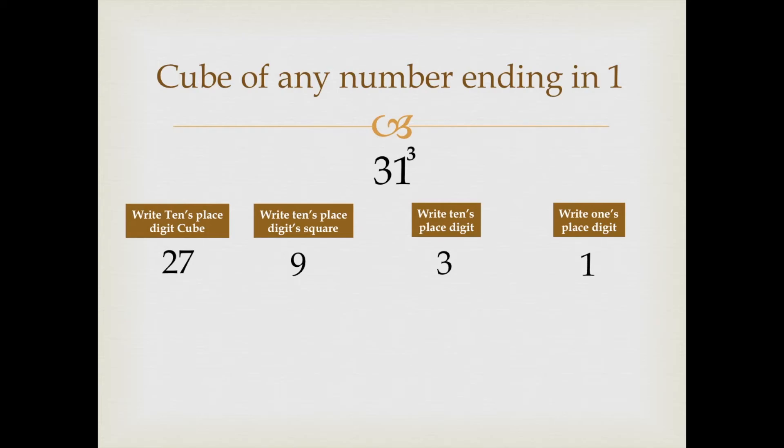Now, we will ignore the first and the last digit and we will multiply the middle two digits. 9 multiplied by 2 will become 18. Write 18 under 9. 3 multiplied by 2 will become 6. Write 6 under 3.